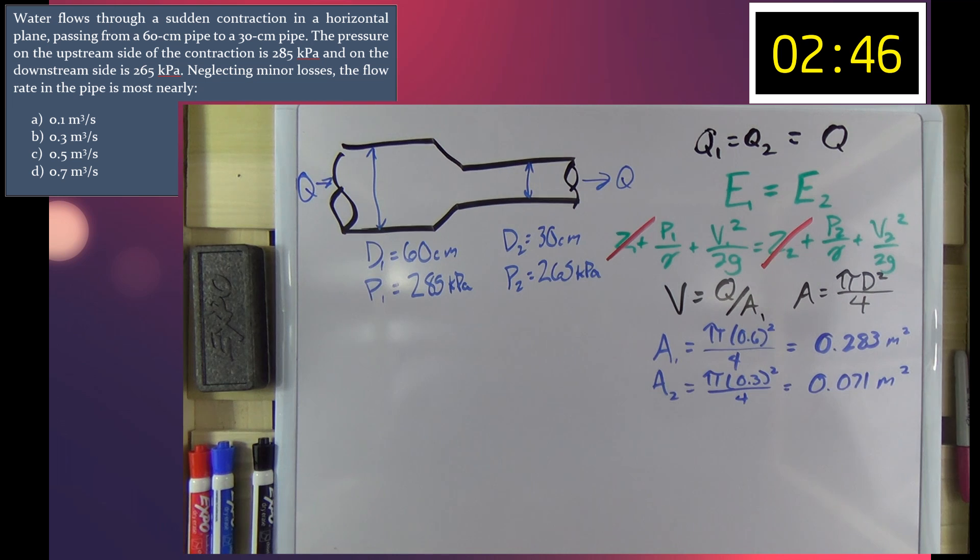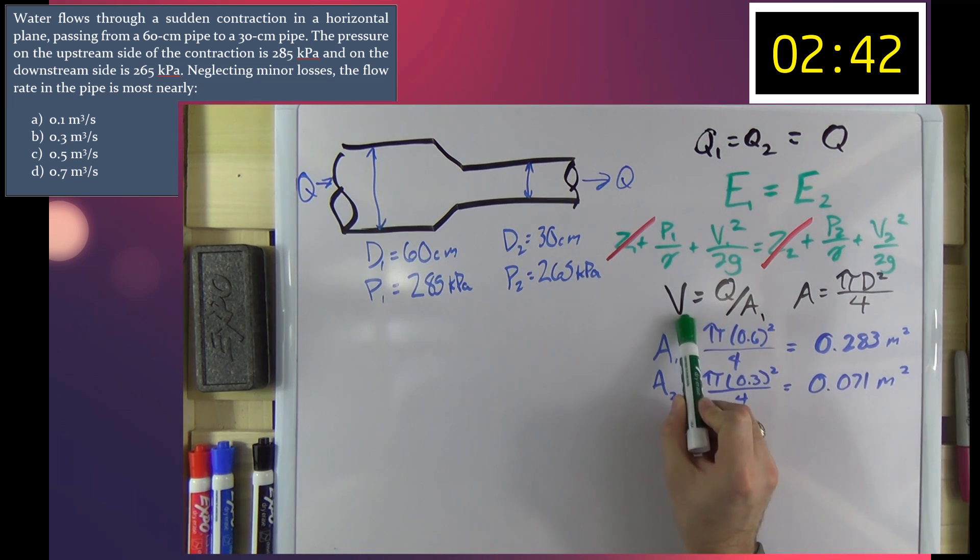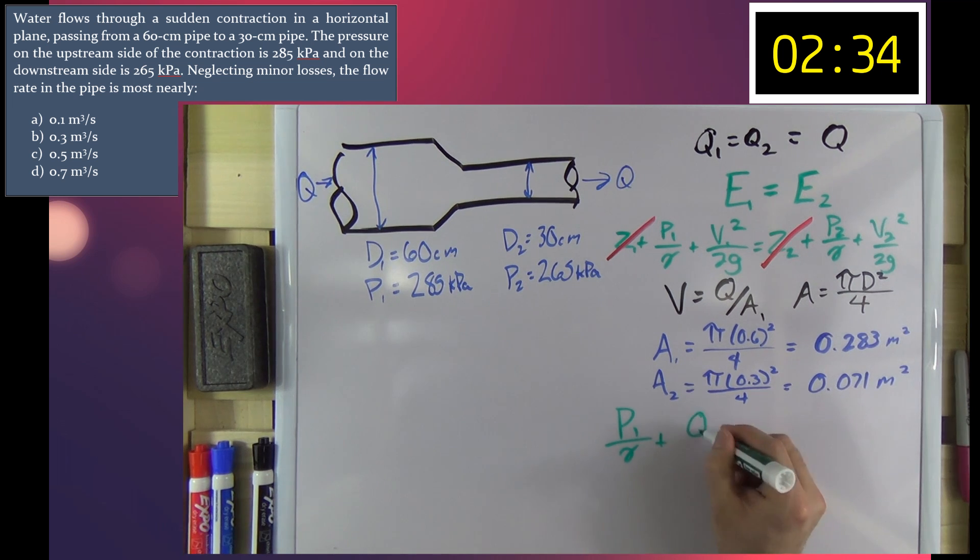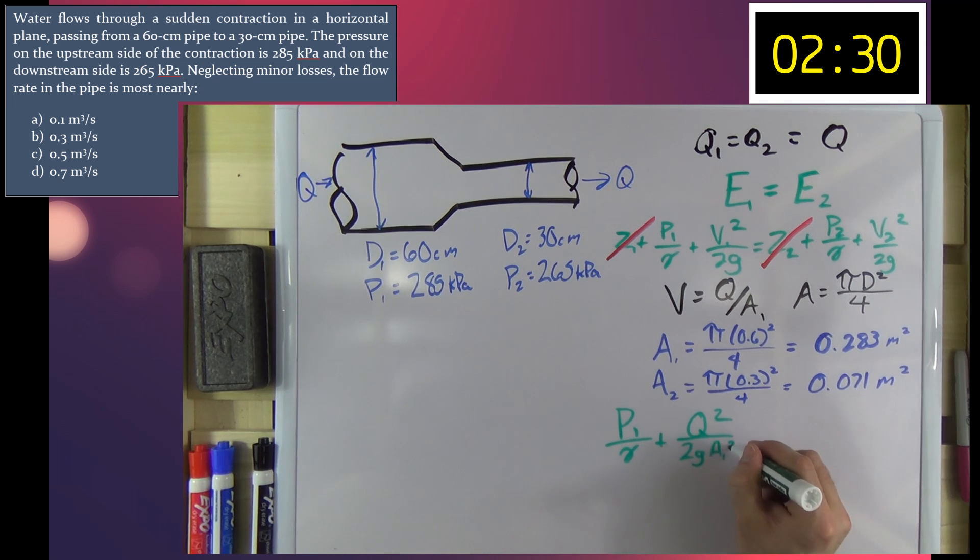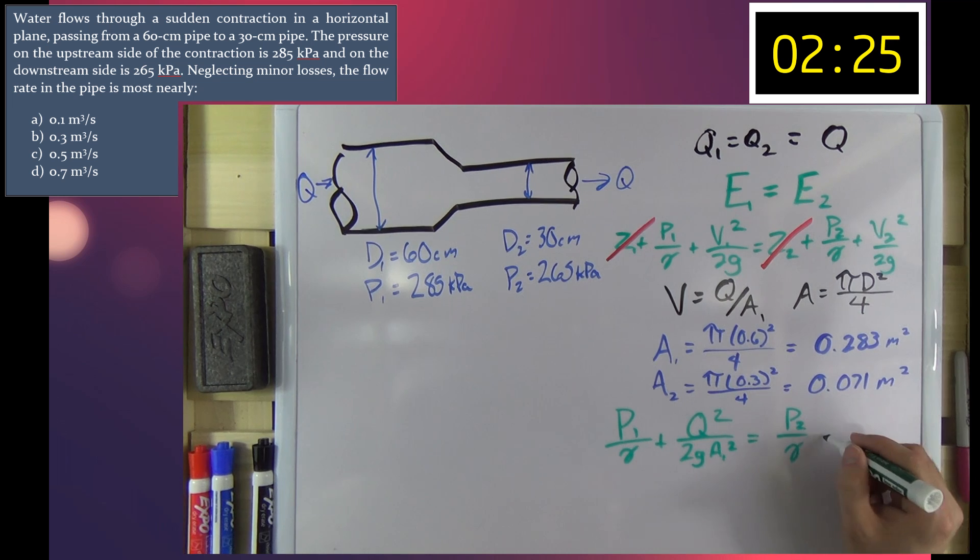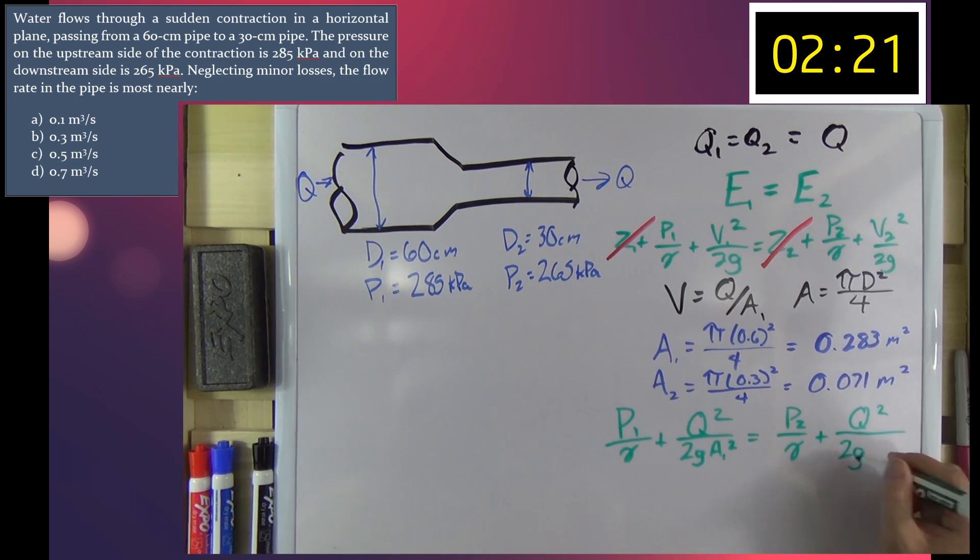Okay, now if we go back to our energy equation up here and we substitute Q over A in for every V term, that equation becomes P1 over gamma plus Q squared over 2GA1 squared is equal to P2 over gamma plus Q squared over 2GA2 squared.